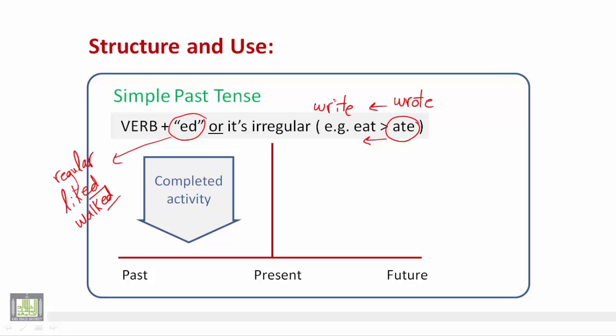Past simple is used usually to talk about an activity or an action that happened in the past and has no relation to the present — استخدم هذا الزمن للدلالة عن حدث حدث في الزمن الماضي وليس له علاقة إطلاقاً بالزمن الحاضر. We try to clarify this by the timeline — حاولنا توضيح ذلك بالخط الزمني. The action happened in the past and finished before the present time — وانتهى قبل أن يدخل الزمن الحاضر.